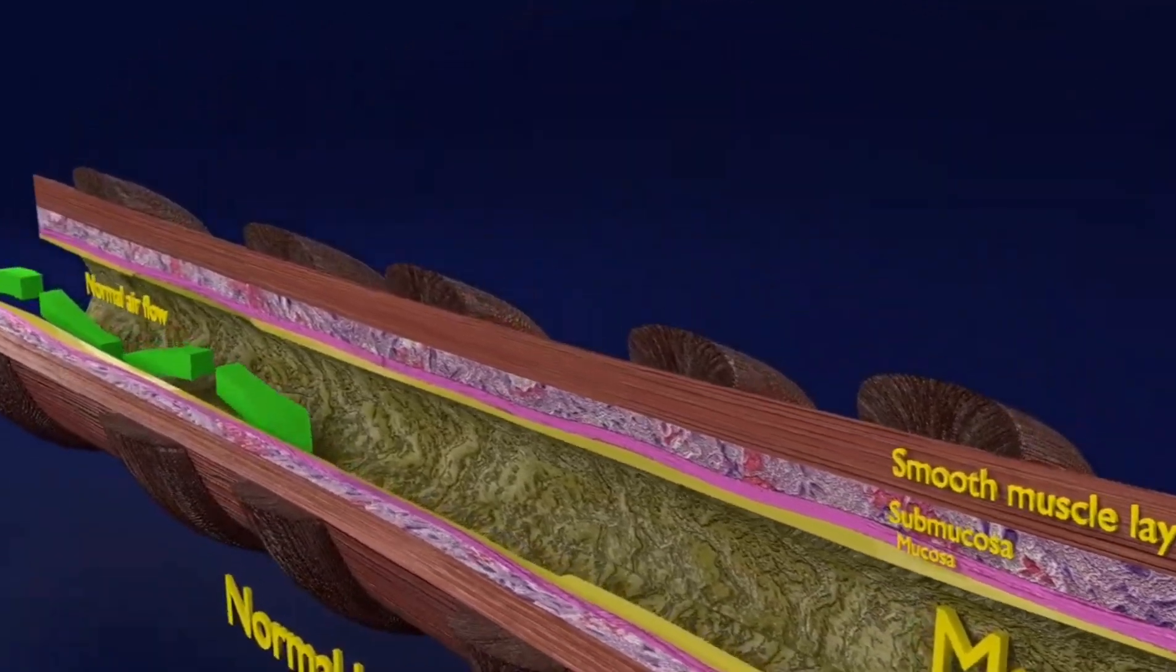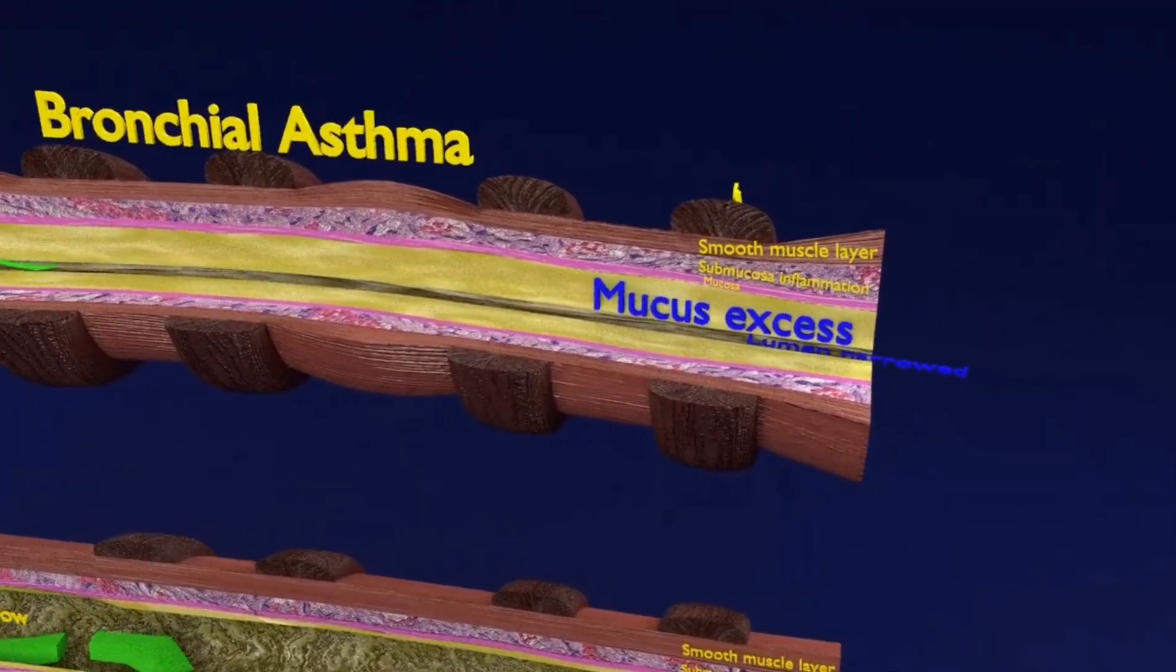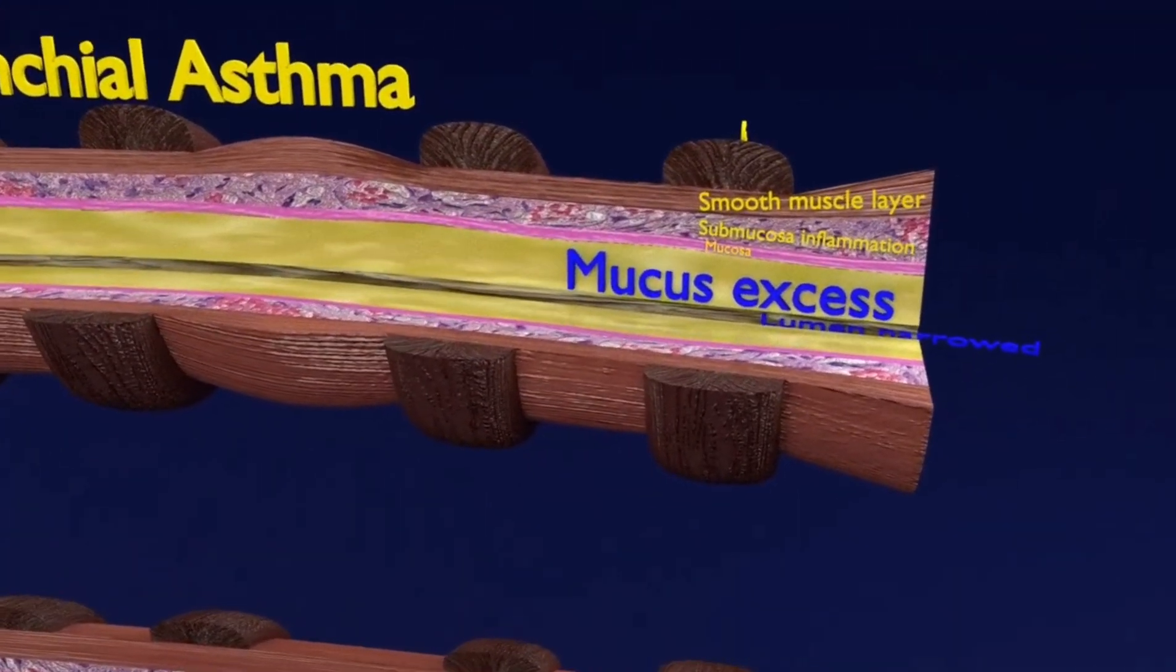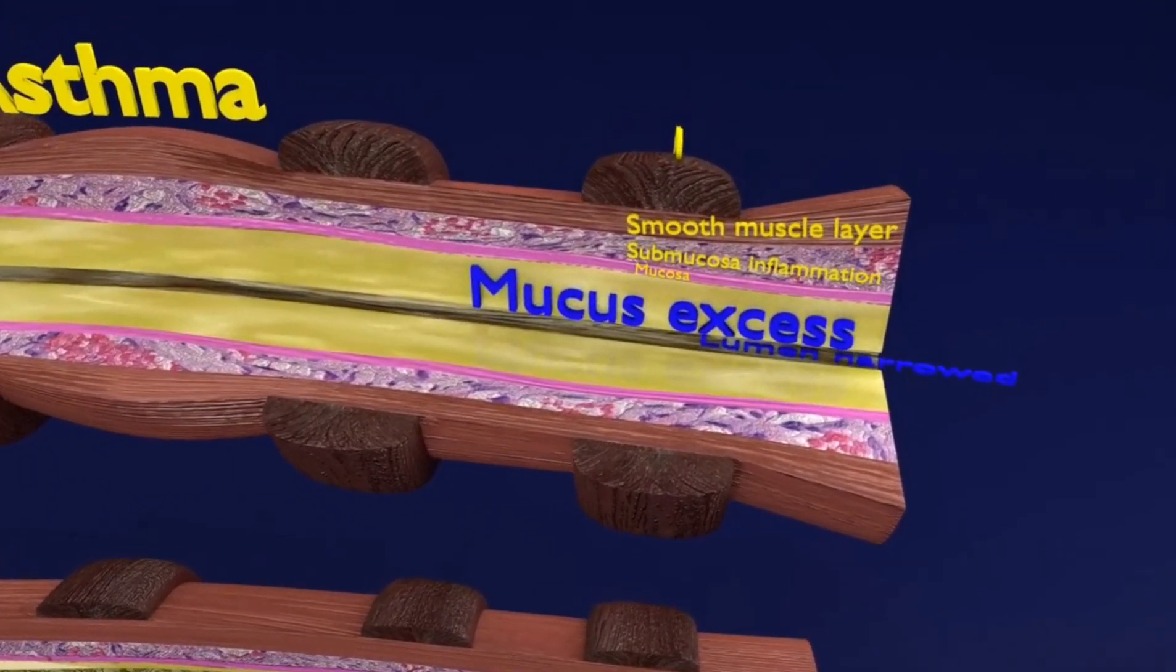Now you are seeing a bronchiole of an asthmatic patient. The changes in airway structure include mucous hypersecretion, submucosal inflammation, and smooth muscle hypertrophy.